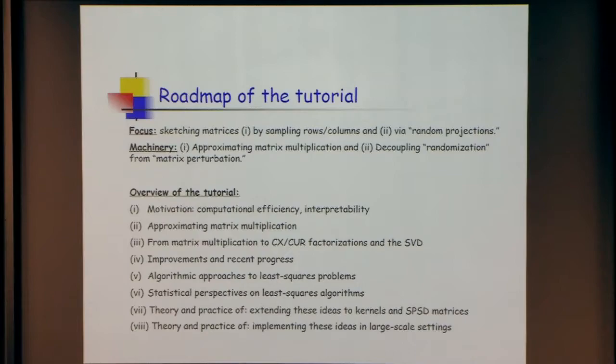An important theme is feeding through matrix multiplication, which is the primitive that appears many times in the analysis. Also, the idea of decoupling the randomization from the vector space structure. Johnson-Lindenstrauss holds more generally in metric space structures, and it's oftentimes too powerful a hammer to get very fine results on matrix computations. Getting structural results and then applying randomness carefully can get you much better results.